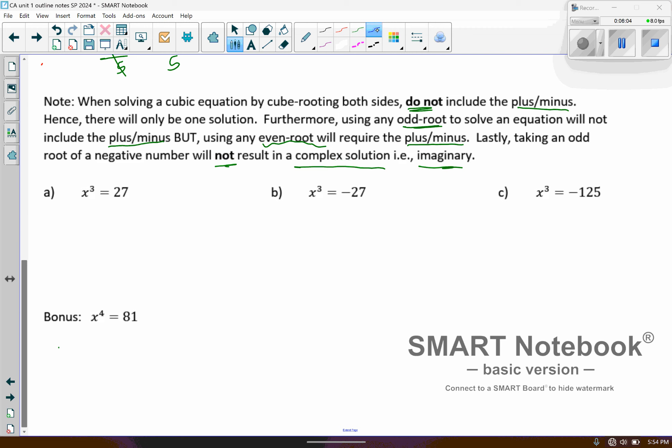So looking at this first example, x cubed equals 27. We're going to take the cube root of both sides. Now, I do not put the plus or minus. And the reason why is there's only one solution that will make this work. There's only one value that when you cube it will equal 27. And that value is 3. So x equals 3. That's the only value that when you raise it to a power of 3 will equal 27.